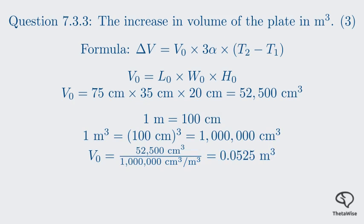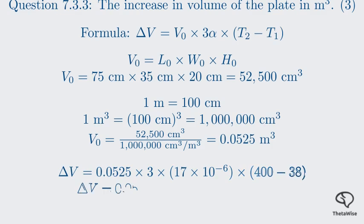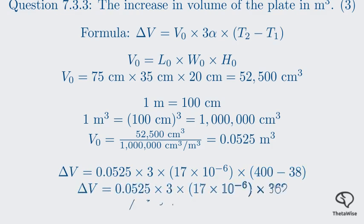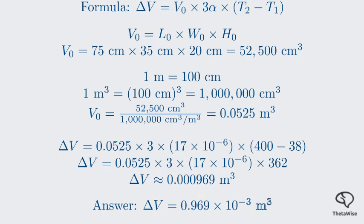Now we have all values needed: delta V = 0.0525 × 3 × 17 × 10⁻⁶ × 362. This gives approximately 0.000969 m³. Expressing in scientific notation by moving the decimal three places to the right: 0.969 × 10⁻³ cubic meters. This matches the answer in the memo.